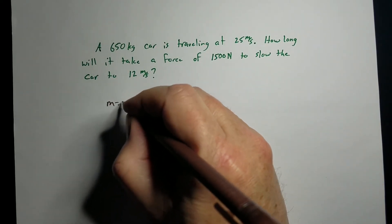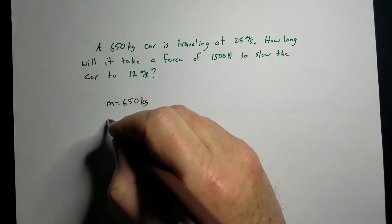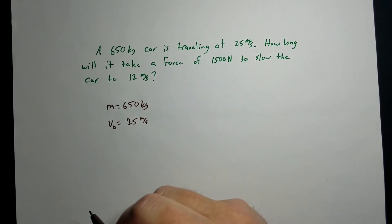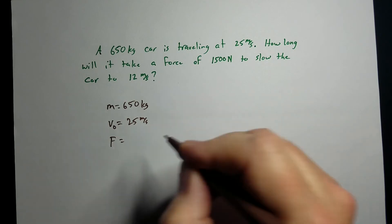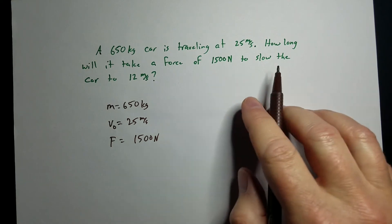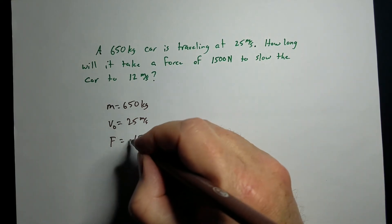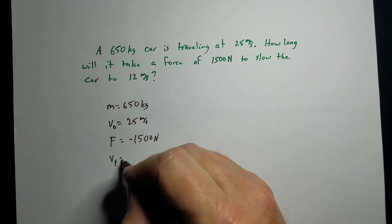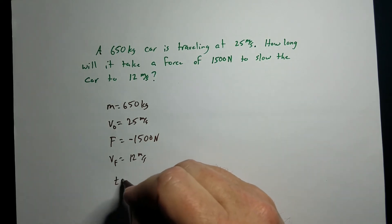So, we've got a mass of 650 kg traveling at, so that's the original velocity, 25 meters per second. So, we have a force of 1500 newtons, but this force is to slow it down. So, since it's to slow it down, we're going to make that negative. And the final velocity is 12 meters per second. And we've got to find the time.